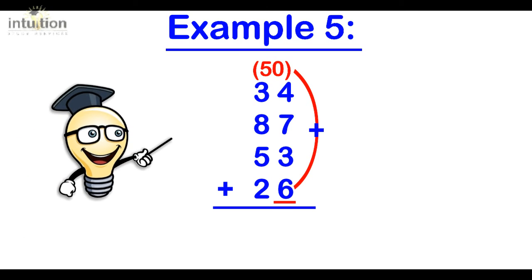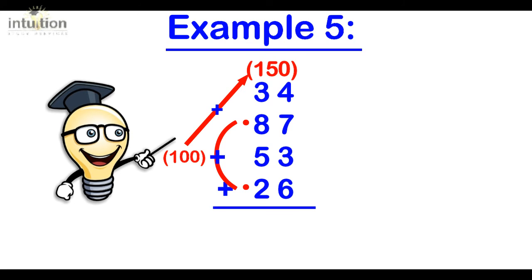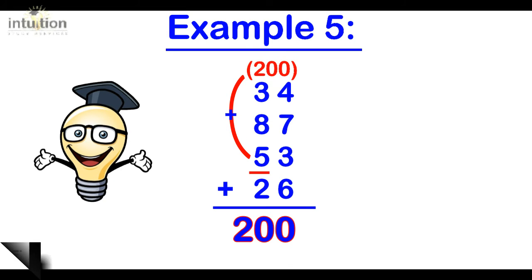And then moving over to the tens column we notice that the 8 tens and the 2 tens complement to make 100. And so we can add that directly to the 50 making 150. And since we've got 5 tens left over or 50 we add that to the 150 making 200.